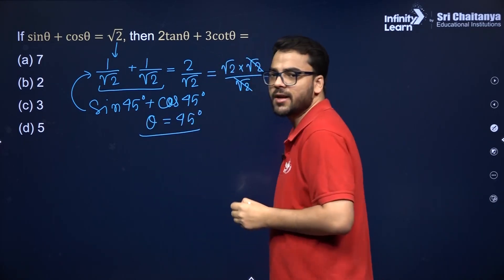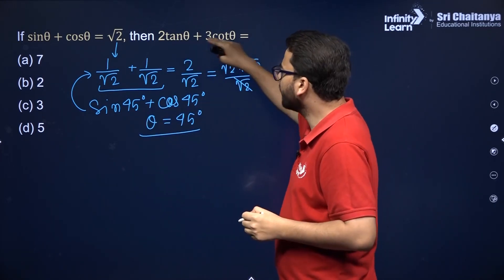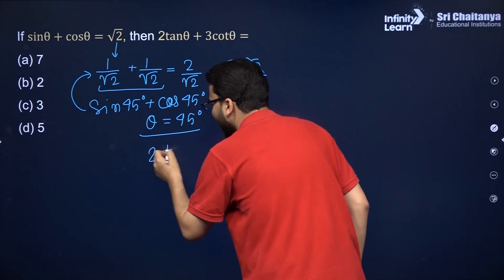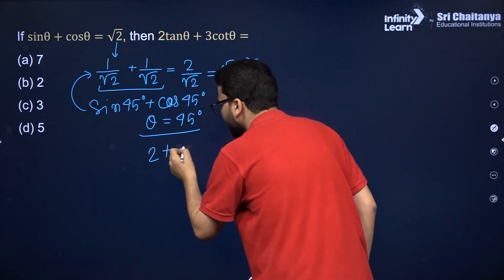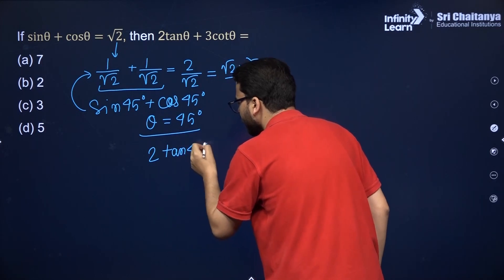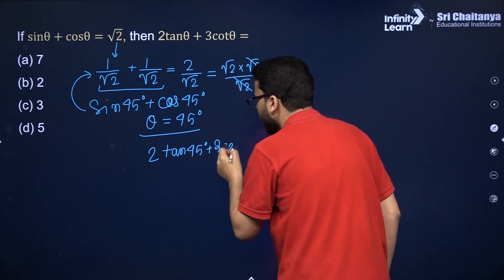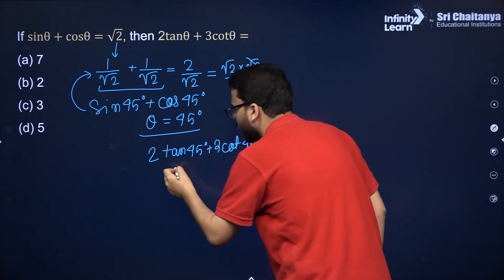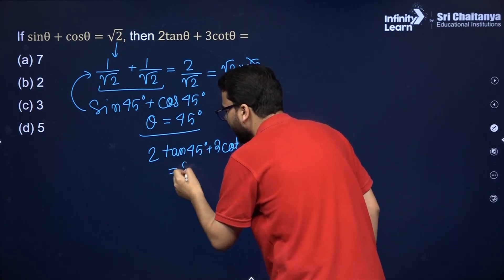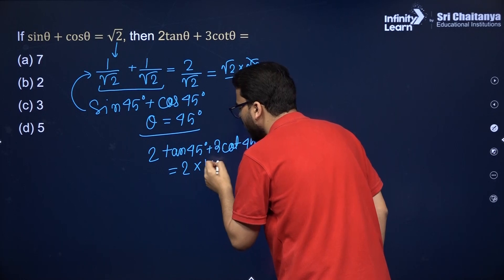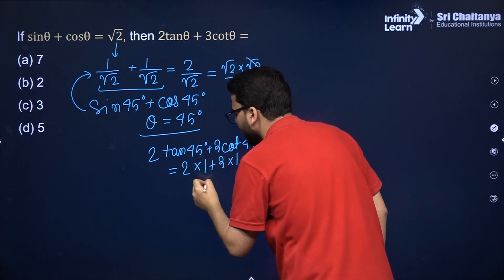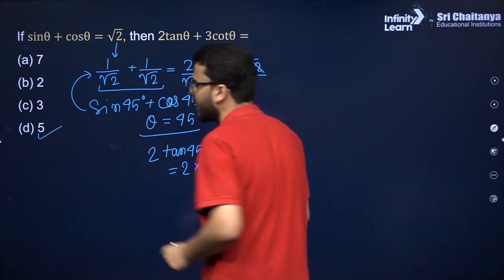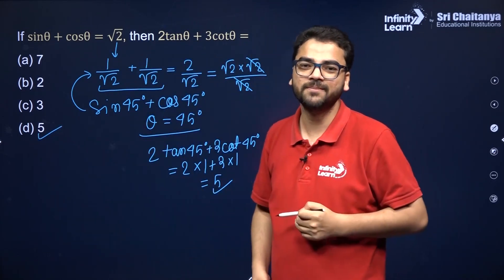So we need 2·tan45 + 3·cot45. Tan 45 = 1 and cot 45 = 1. So the answer is 2 + 3 = 5. Option D is correct.